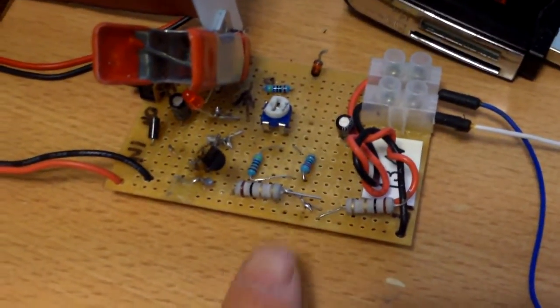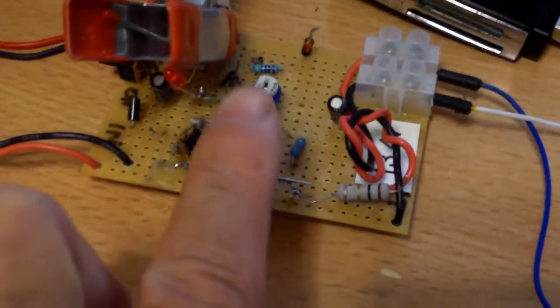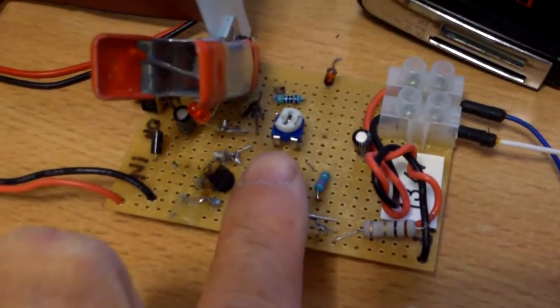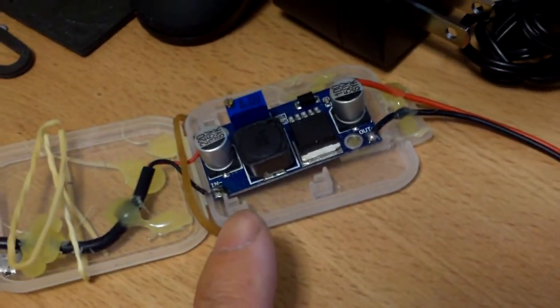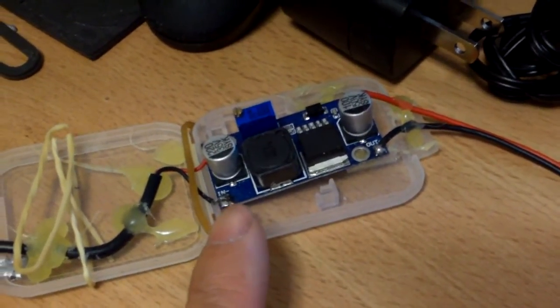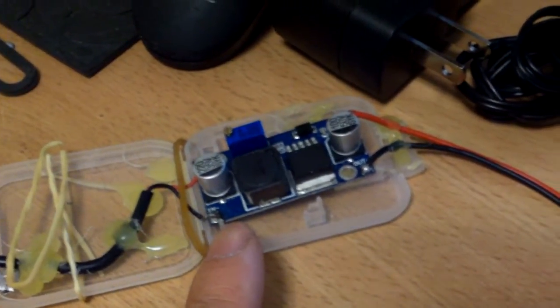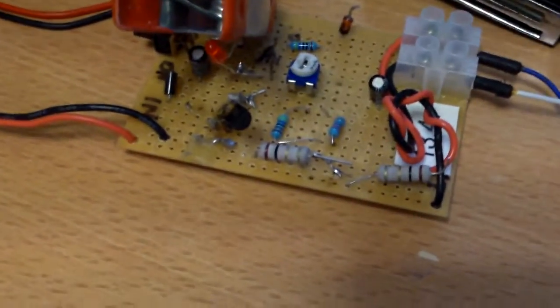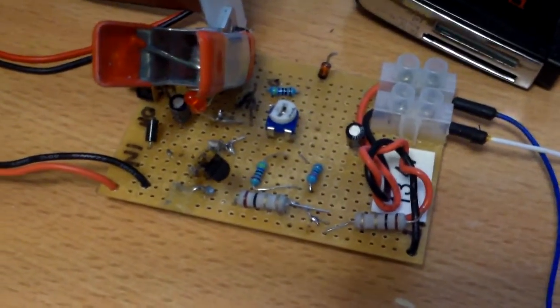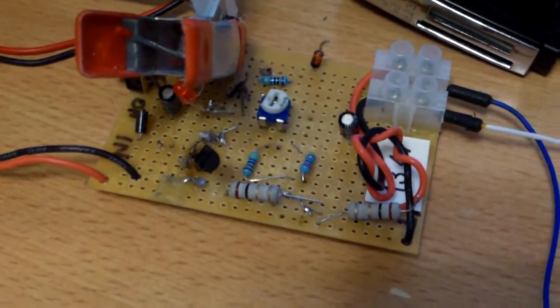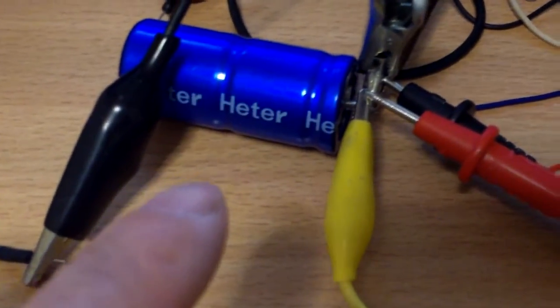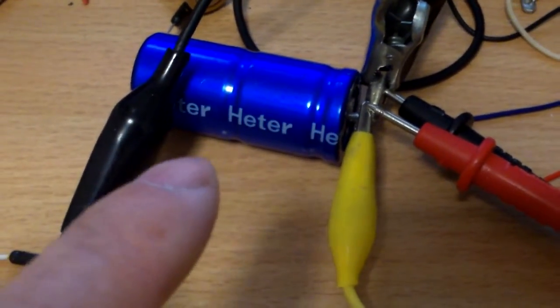But it has an adjustable resistor, a potentiometer here, and together with the voltage booster which also has an adjustable voltage adjustment, I was able to set the charging voltage and limit it to 2.7 volts, which is the maximum for this super capacitor.